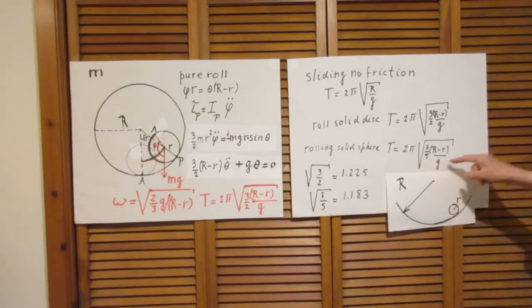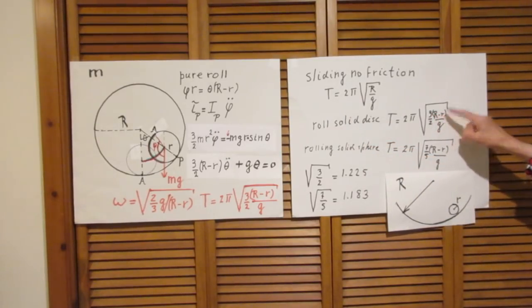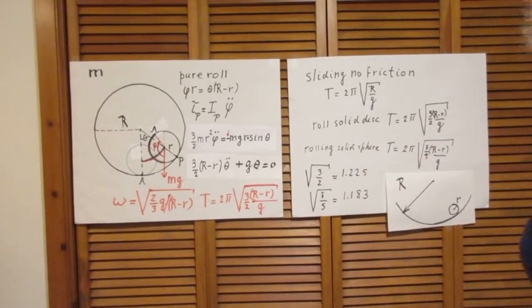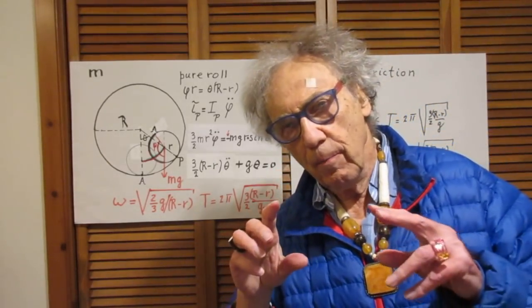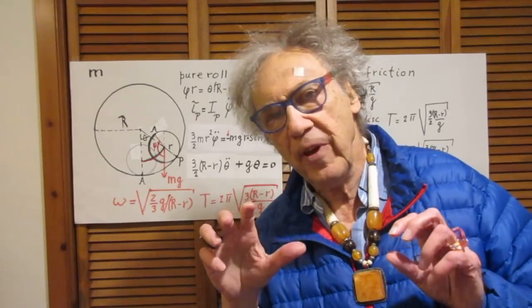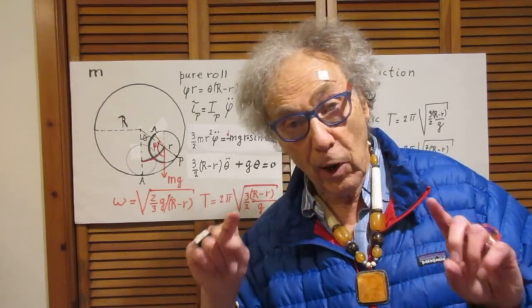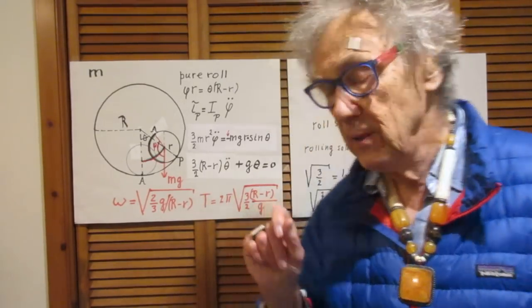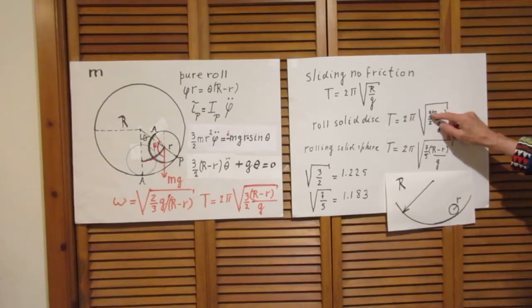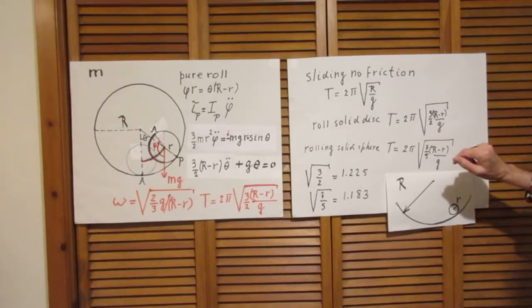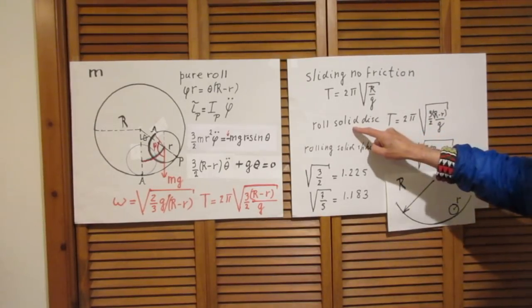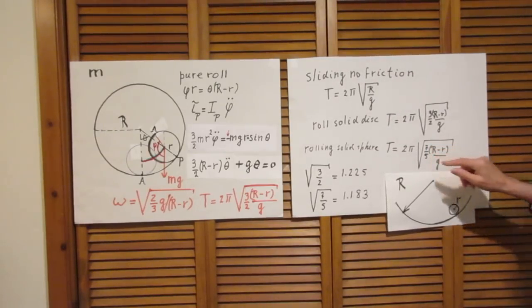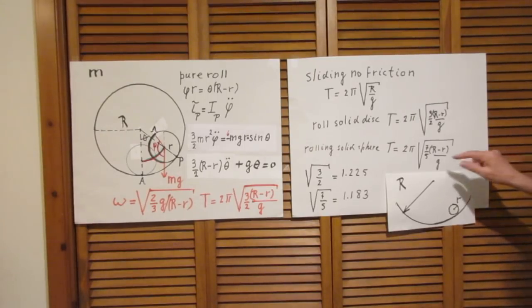Here is our solid disk solution. We have here the 3 over 2 R minus R. If you take a solid sphere, the moment of inertia about the center is 2 fifths m R squared, but you use the parallel axis theorem, so you add m R squared, giving you 7 fifths m R squared. Therefore, here we have 3 over 2, which is the consequence of the moment of inertia of the rolling solid disk. Here we have 7 over 5, which is the consequence of the moment of inertia of a solid rolling sphere about that point P.